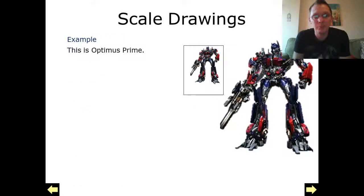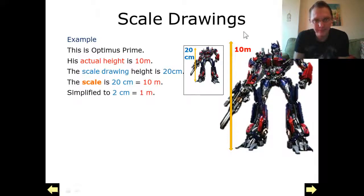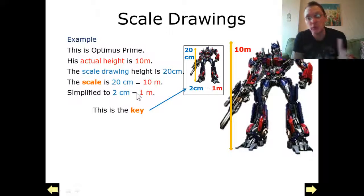Here's another example, using a well-known Transformers character. His actual height is 10 metres tall. The scale drawing height is 20 centimetres tall. We could use a scale of 20 centimetres equals 10 metres. I've actually simplified this by dividing both of these two by 10, to 2 centimetres equals 1 metre. This has actually became our key on our drawing.